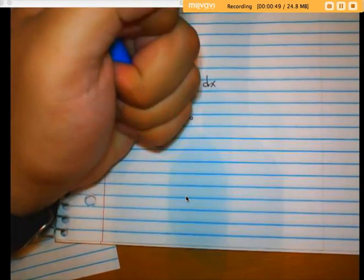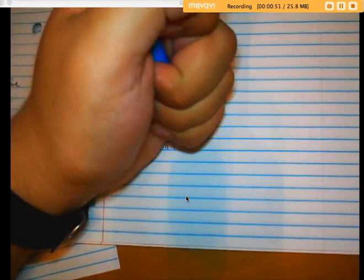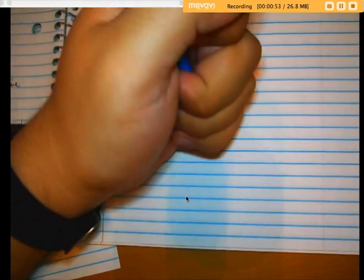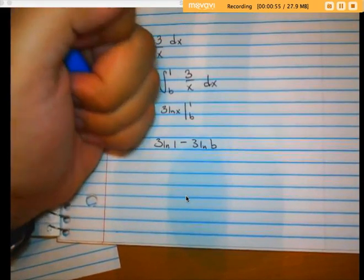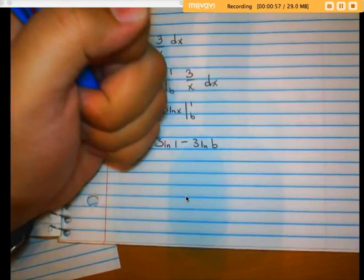So that's going to be 3 natural log of 1 minus 3 natural log of b, as the limit as b approaches zero.